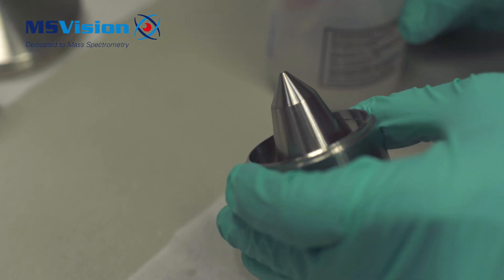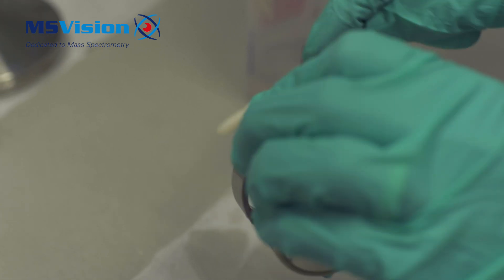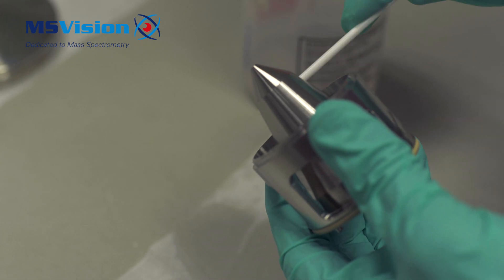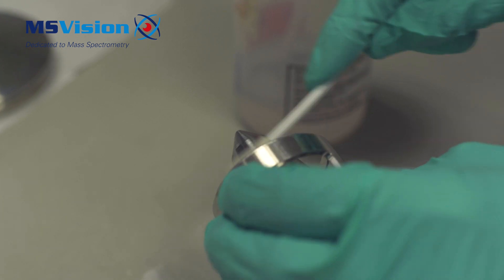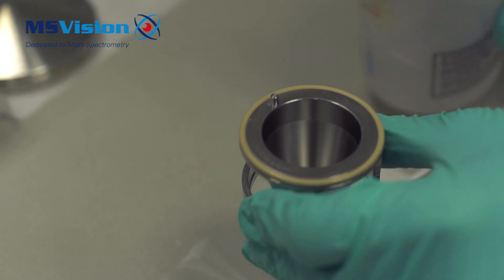Pull out the skimmer and then squirt methanol and wipe it clean with a wipe. There is rarely anything on the skimmer that cannot be removed by this method. Dry in nitrogen or air.